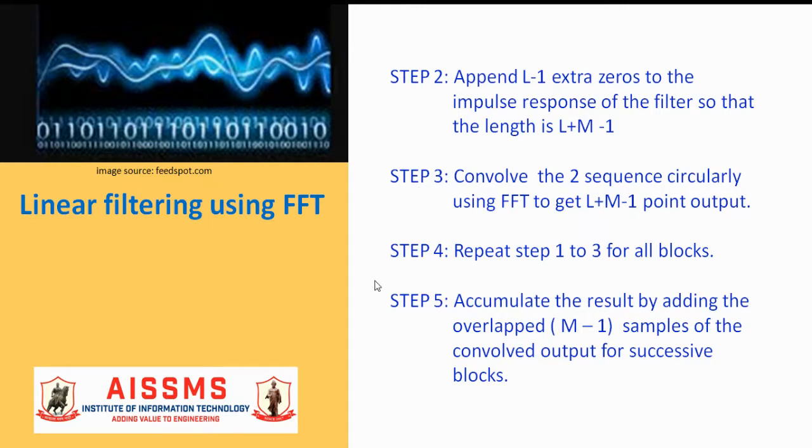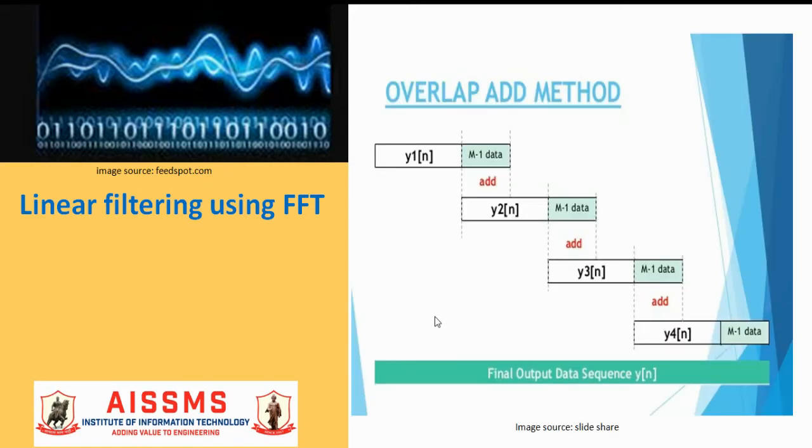Step 4 is to repeat the steps 1 to 3 for all blocks. Note that if the last block is of shorter length, then extra zeros are to be appended. Step 5 is to accumulate the results by adding the overlapped M minus 1 samples of the convolved output for successive blocks. Here we are adding the overlap samples of the results, and hence the name of the algorithm is overlap and add algorithm.